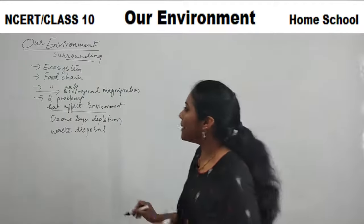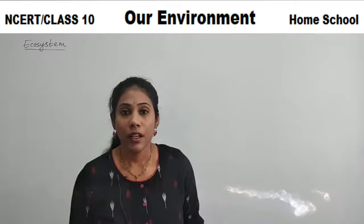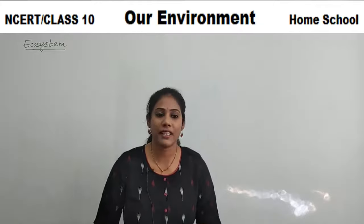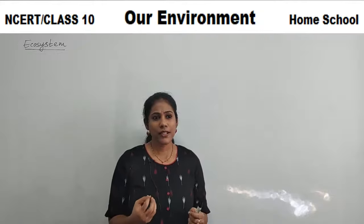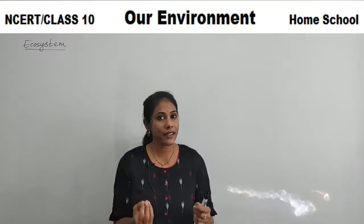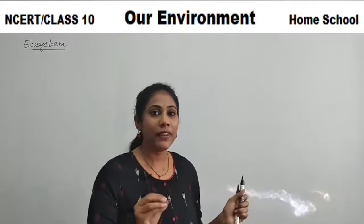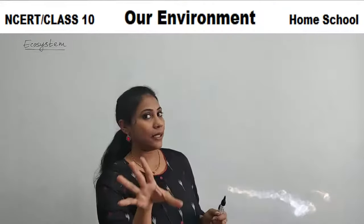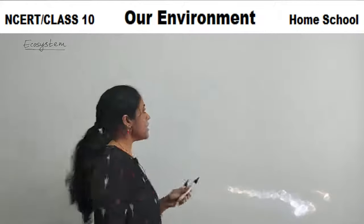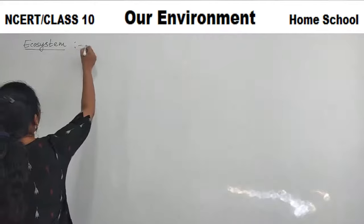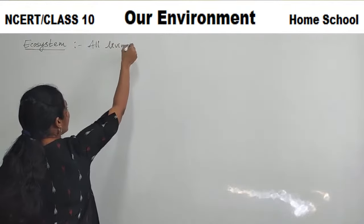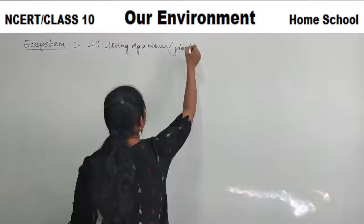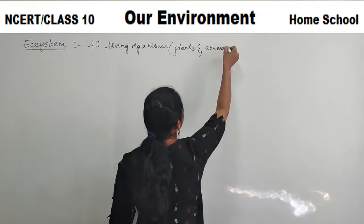Ecosystem is not a new word — you may have studied it in your lower classes also. It has a vast meaning and you need to understand it completely. Here is the definition of ecosystem. It may look a little lengthy but you can understand and remember it very easily. Ecosystem involves all living organisms — meaning plants and animals. What do you mean by living organisms on Earth? It's nothing but plants and animals.